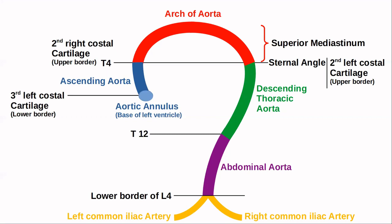These are the four key parts of the aorta. The ascending aorta runs between the lower border of the third left costal cartilage and the upper border of the second right costal cartilage. T4, also known as the sternal angle, is very important — the arch of aorta begins and ends there, entirely within the superior mediastinum. The descending thoracic aorta runs from T4 to T12, and the abdominal aorta from T12 to the lower border of L4, ending by dividing into right and left common iliac arteries.